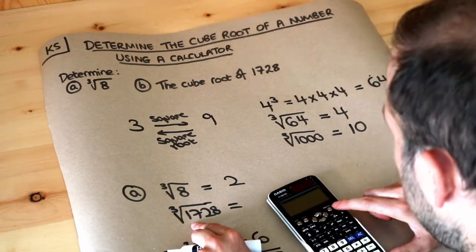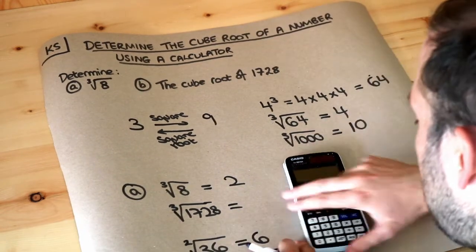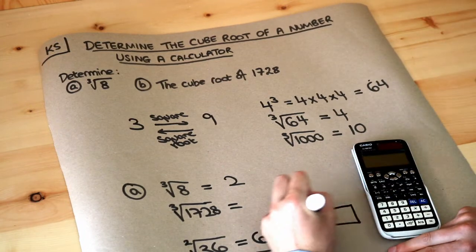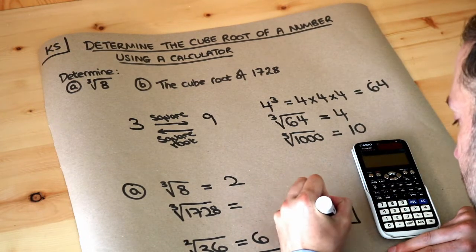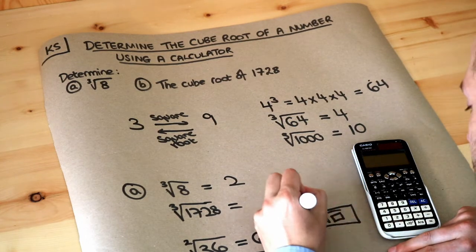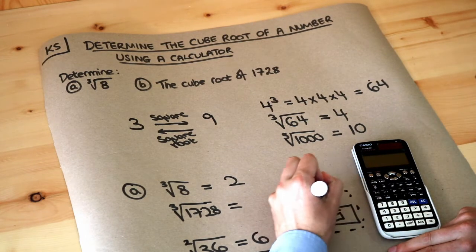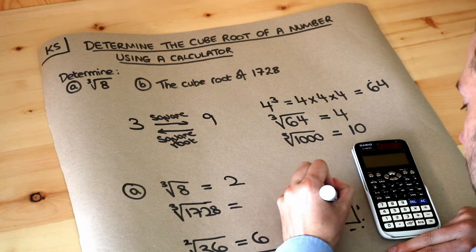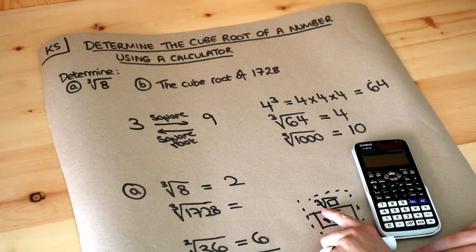Now to get the cube root of a number, what we do is we use a button on your calculator which might look like this, and it will have on top of the button what looks like the cube root symbol here.